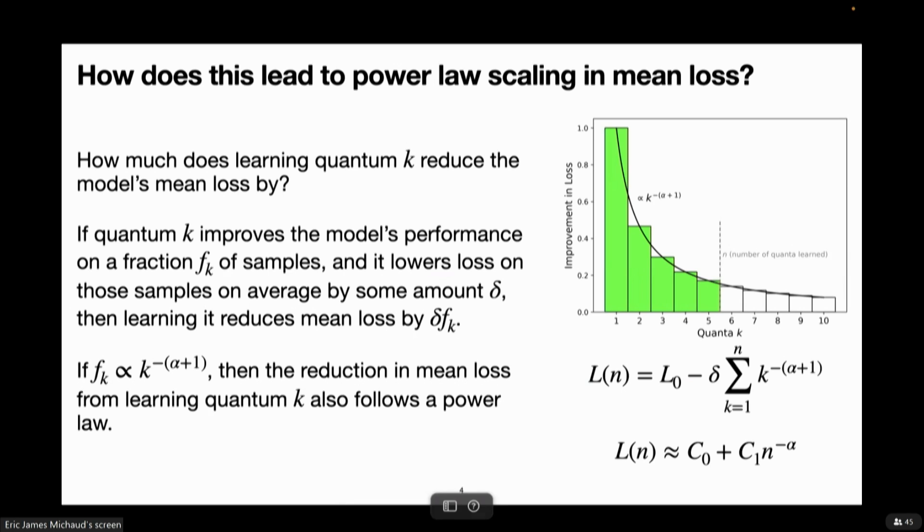And we can see how this gives us power law scaling in the following way. If you just consider the change in the mean loss, the mean error that comes from learning an additional one of these quanta, if it is useful for prediction on some fraction f_k of samples for quantum k, and it lowers loss on average on those examples by some amount, then just the amount that learning that piece of knowledge, that quanta, lowers your mean loss is just proportional to that frequency. And so if the frequencies follow a power law, then your loss as a function of how many you learn, you can basically just integrate under the curve of how much you reduce loss from learning each of the first n of these things, and integrating under a power law gives us a power law where we go from a power law in frequency with x^(-alpha-1) to a power law in loss as a function of the number of these quanta that you learn with x^(-alpha).